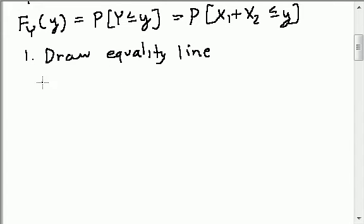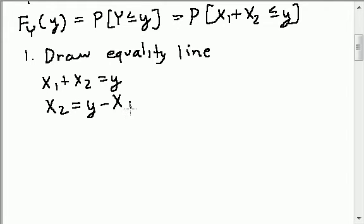And the equality line is x1 plus x2 is equal to y. It's easier to see sometimes that it's a line if you write it as x2 equal to y minus x1, or the other way around. And if I do this on a graph, I can label x1 and x2 as my axes, and I can try to figure out what this line is.